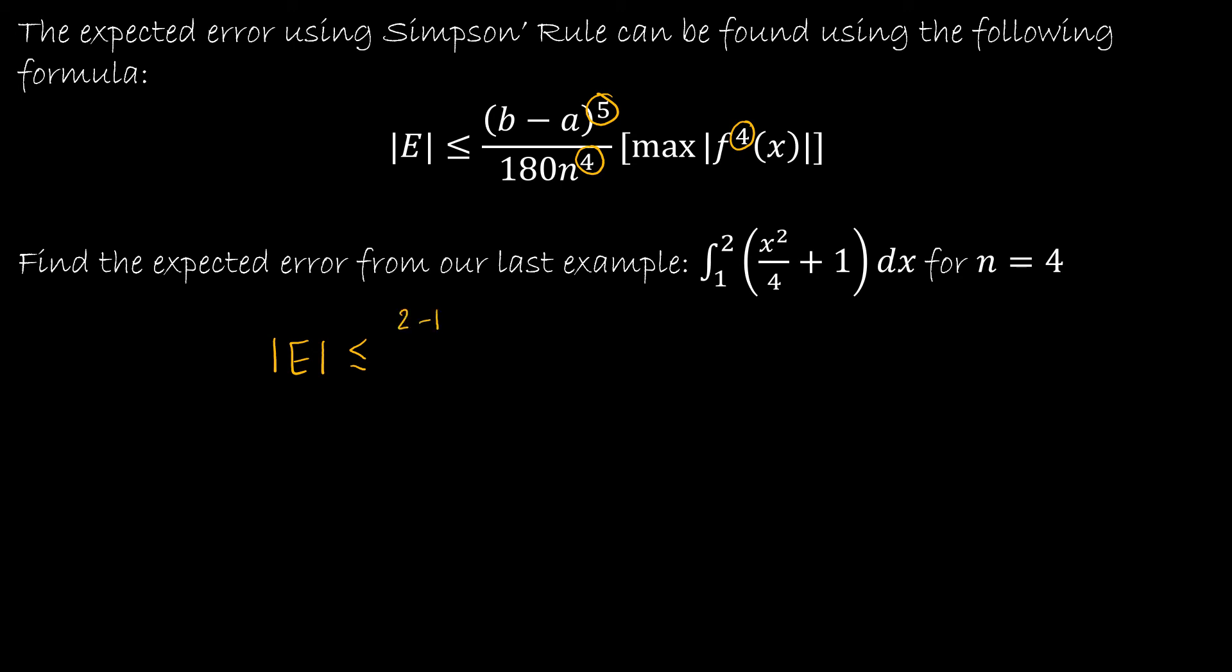Let's take a look at what we can expect our expected error to be based on our last example. So b minus a would still be 2 minus 1 to the fifth. My denominator is 180 times n is 4, so 4 to the fourth. And just as before, we had f equals x squared over 4, f prime equals x over 2, f double prime was 1 half. The third derivative would be zero and the fourth derivative would be zero. So the max of the fourth derivative would in fact be zero, so I can expect my error to be essentially the same result as the exact value.